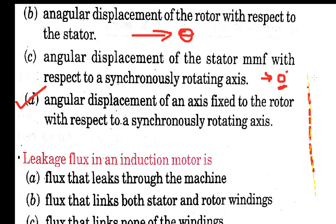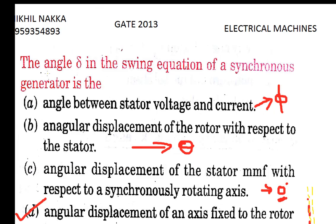When the machine is loaded, this alignment does not stay the same. If load is increased, the yellow axis shifts — let's say to the right — through an angle Delta. Due to this Delta, synchronizing power comes into existence, the hunting phenomenon occurs, and it pulls the yellow line back to align with the red line.